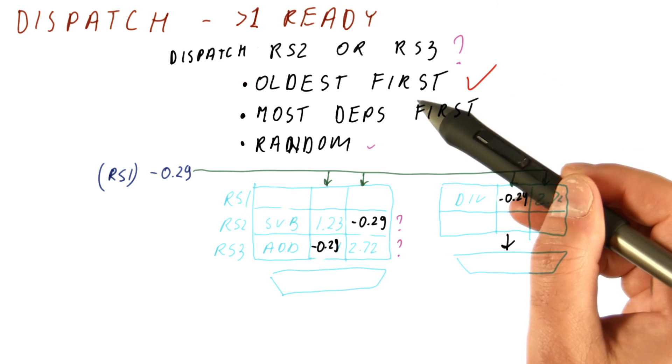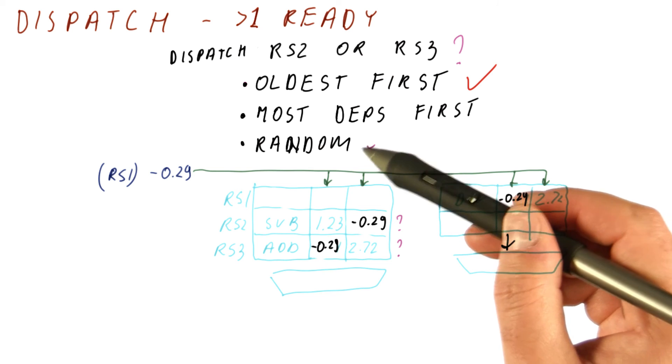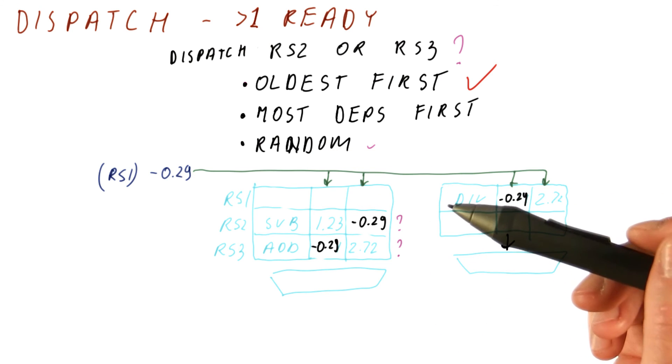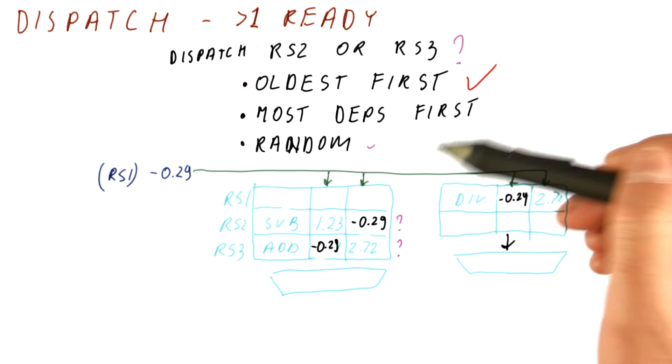So typically, oldest first does help somewhat with releasing instructions from here, while random is okay as far as just correctness is concerned. So pretty much any one of these three would work. It's just a matter of which one would lead to the best performance.